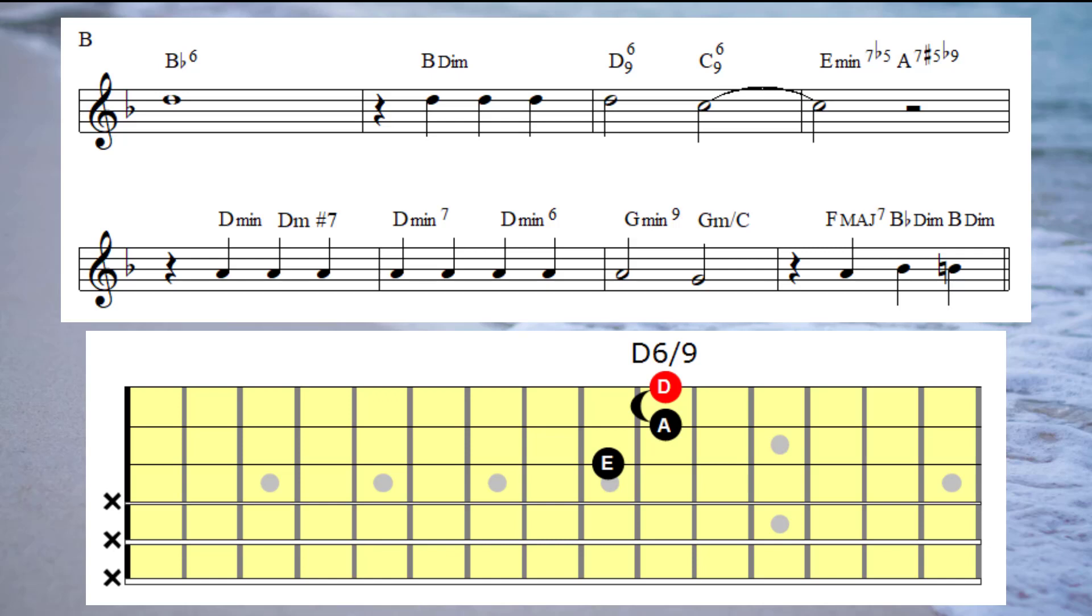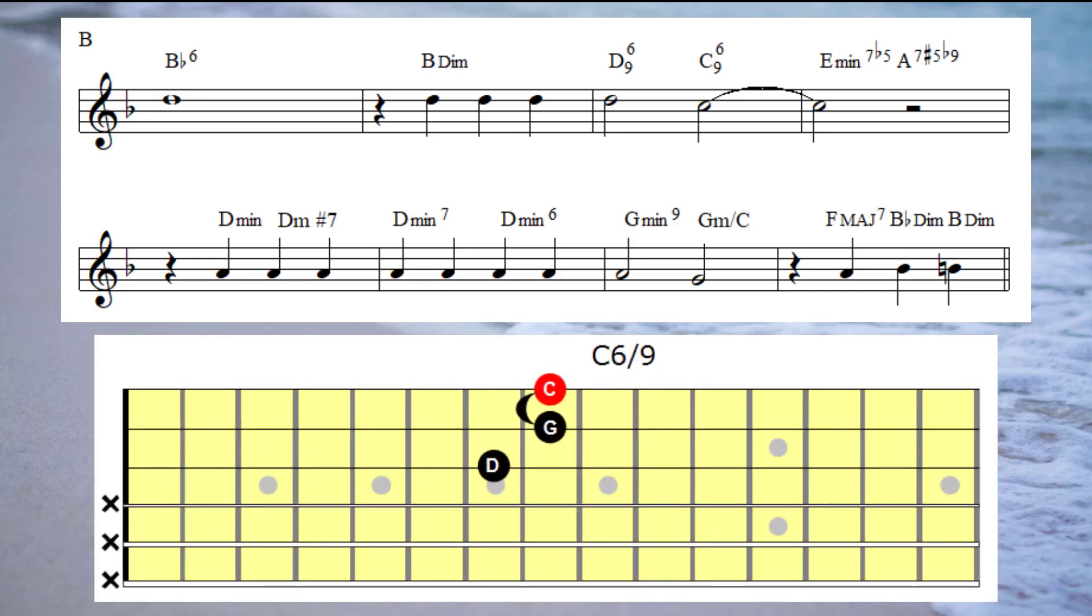With the same name as the melody note, so I'm going to play a D six nine chord under the D melody note, and then I'm going to play a C six nine chord under the C melody note.